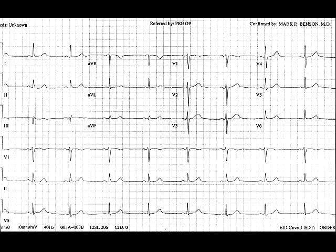This tells you that atrial depolarization originates high in the right atrium, in the sinus node, and travels in a downward direction towards the feet. The QRS axis is normal, upright in leads one and two. The intervals are normal.